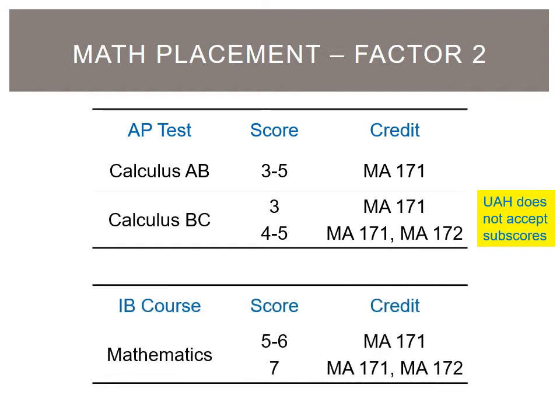You can also earn credit for Calculus A and Calculus B through the IB program. If you score a 5 or a 6, you will receive credit for Calculus A and be placed into Calculus B for your first semester. If you score a 7, you will receive credit for Calculus A and Calculus B and be placed into Calculus C for your first semester.